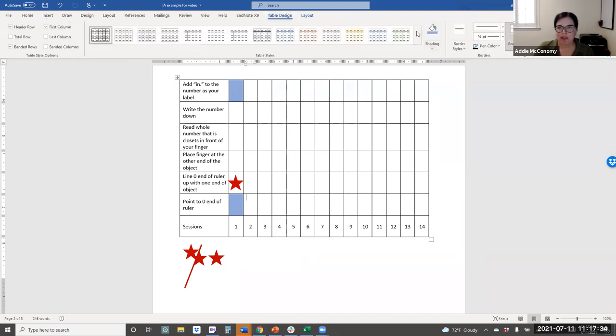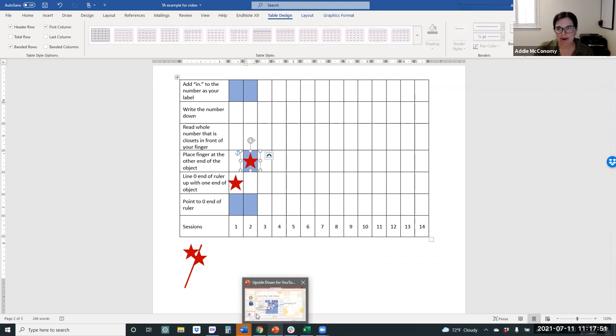So maybe during the next session, they point to the end of the ruler and they're also able to point to the end of the object and they're able to write down inch. Now in this instructional session, they've mastered three steps independently correct. So I'm going to ask them to put that star at the third mark.